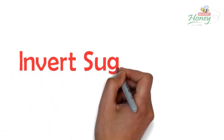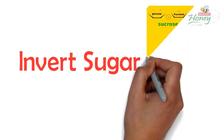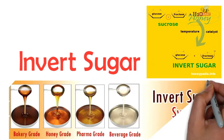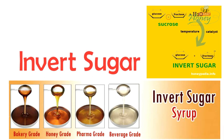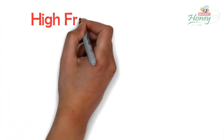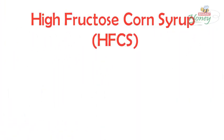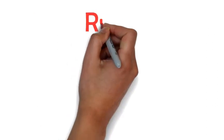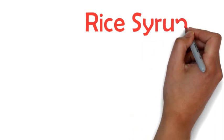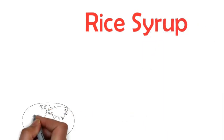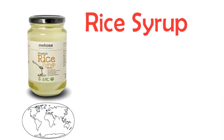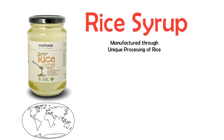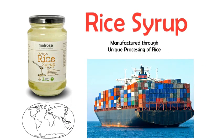The next in line is Invert Sugar, which is manufactured by processing refined sugars. This thick, shiny liquid is usually sold as honey-grade Invert Sugar. Next up is High Fructose Corn Syrup — as the name suggests, it is made from sweet corn. Last and most common of them all is Rice Syrup, a sophisticated adulterant used worldwide, manufactured through unique processing of rice and imported into India on a large scale.